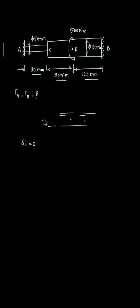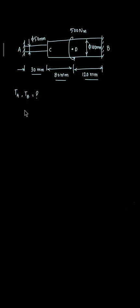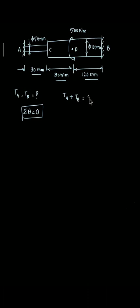How do we solve this? In the case of a longitudinal force problem, you consider total deflection is constant. In this torque or torsional moment problem, we consider that the total angle of twist is equal to zero. This is the condition we apply to find the twisting moment at A and B. Another important condition is balancing the torques: TA plus TB is equal to 500 Nm.